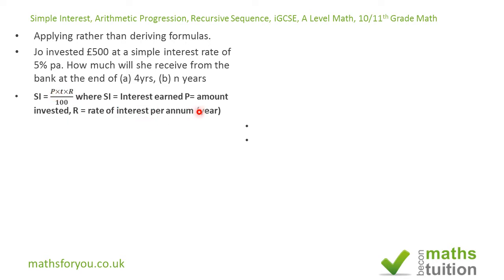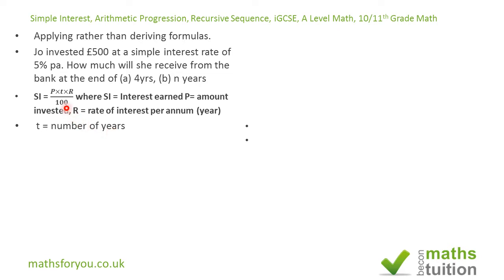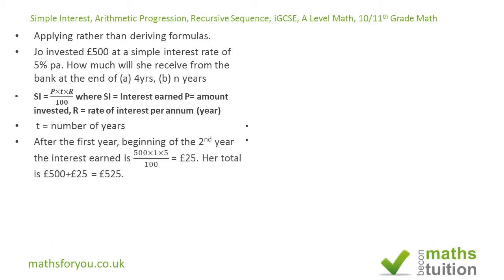The simple interest formula is I = PRT, where P is the principal amount invested, R is the rate of interest, and T is the number of years or time period. You must make sure that the units are consistent — if the interest rate is expressed per year, then T must also be in years. For example, if T is six months or nine months, then T would be 0.5 or 0.75 years respectively.